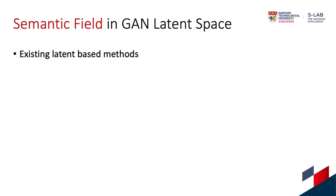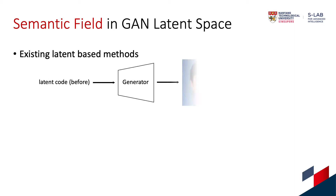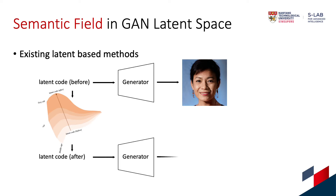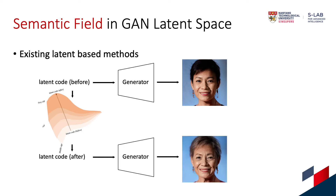Before I introduce our editing module, the semantic field, let's review how existing latent-based methods work. This class of methods use a pre-trained generative adversarial network, where the generator maps a latent code to an image. To achieve the desired manipulation, these methods move the latent code in the latent space along a chosen direction to obtain a new latent code. This new latent code will then be mapped to the desired edited image.